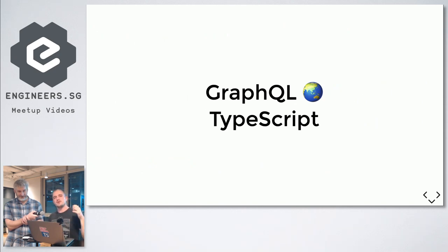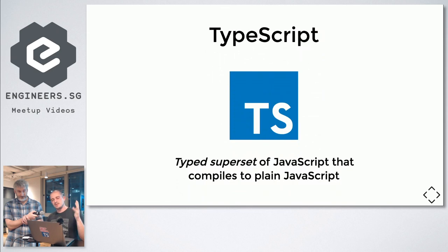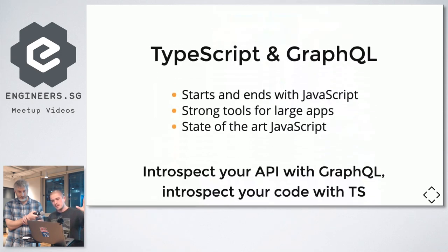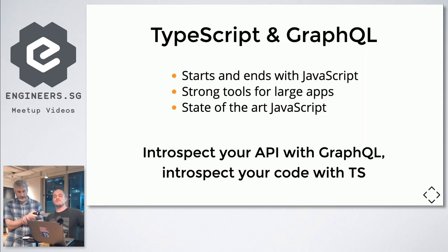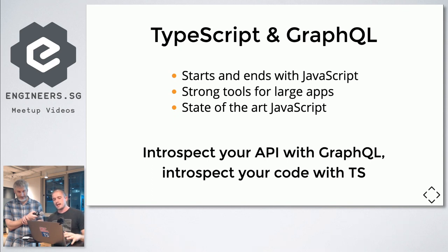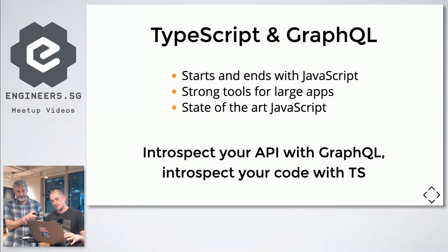We probably know that GraphQL is good for over-fetching, under-fetching, the type system, the introspectability, and so on. TypeScript is a typed superset of JavaScript that basically adds types to our front-end or back-end code. Together, TypeScript and GraphQL both start and end with JavaScript. They are strong tools for large applications. TypeScript is backed by Microsoft — TypeScript nowadays is incredible, with new features every single week. We want to introspect our API with GraphQL and also introspect our codebase with TypeScript.